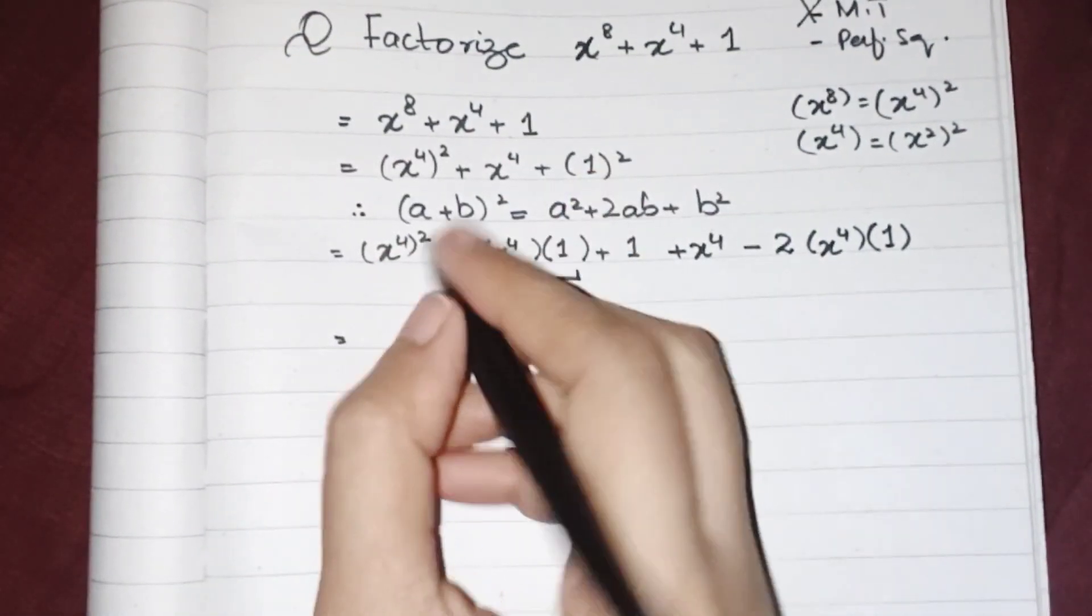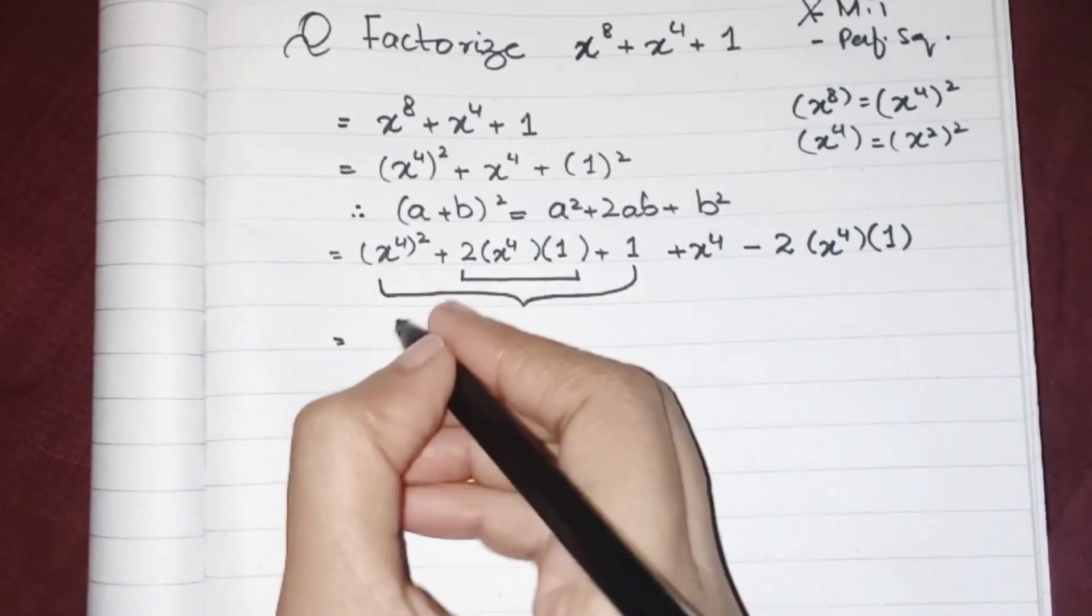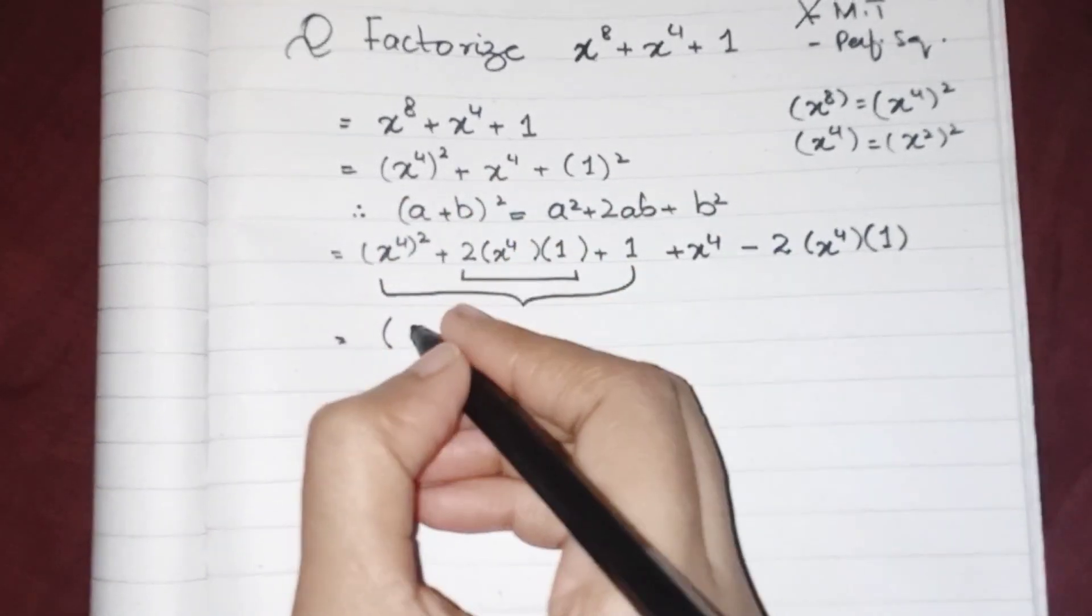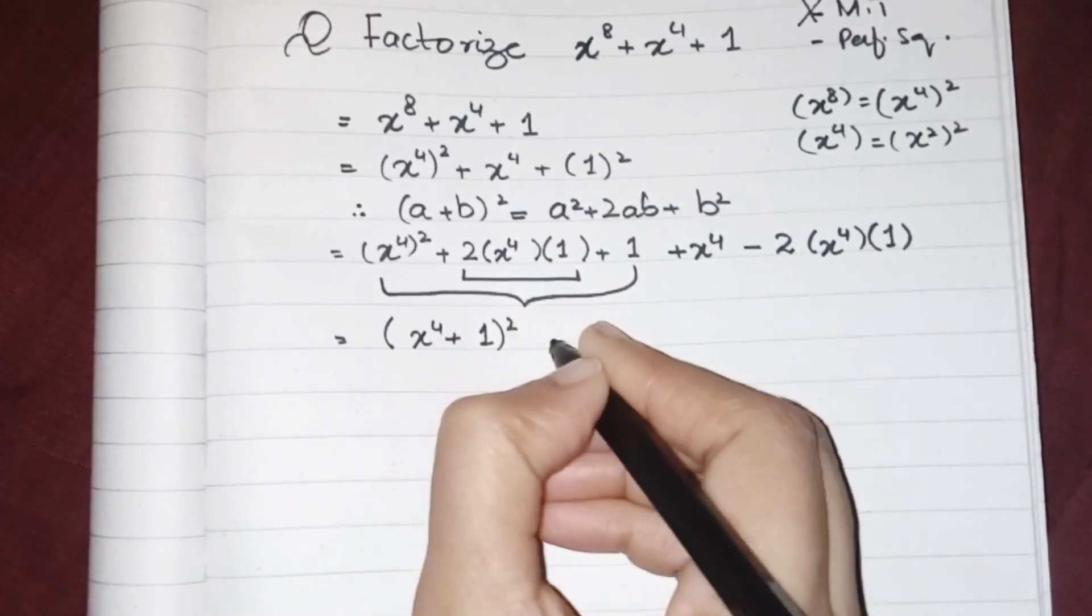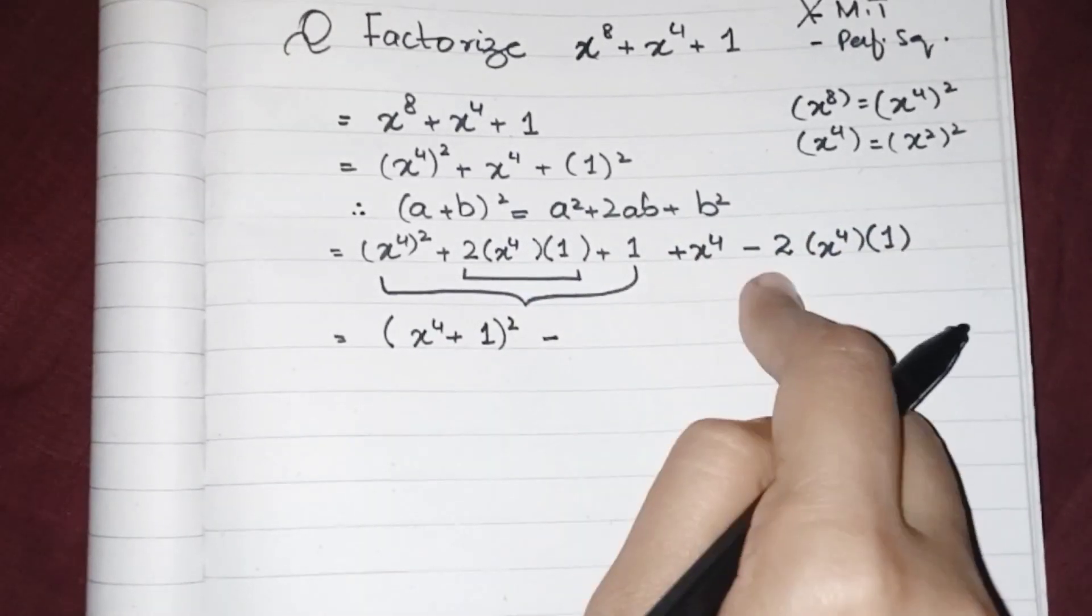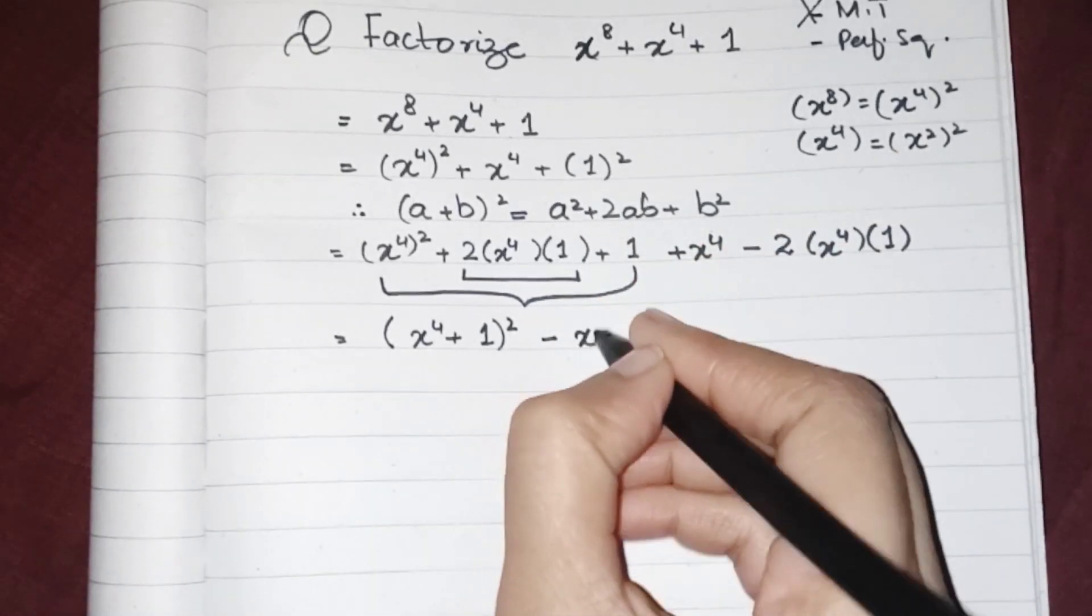So in place of this complete portion, we can write (a + b)^2. So it will be like (x^4 + 1)^2 plus minus minus 2x^4, minus x^4 will result as minus x^4.